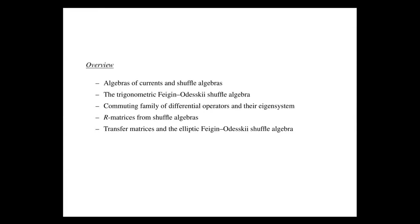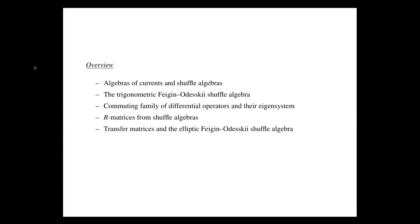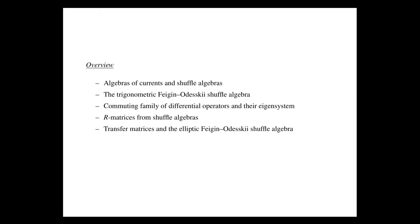This will give rise to a commuting set of operators of the original algebra, and this is how we get the connection with integrability — because in integrability we would like to have infinitely many commuting operators. I will then take a particular example: the trigonometric shuffle algebra. I will construct, following Feigin and co-authors, a family of commuting operators.